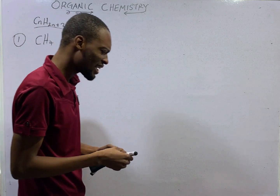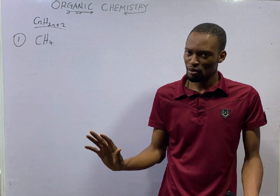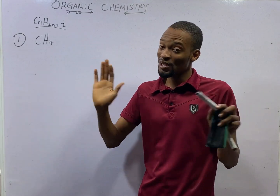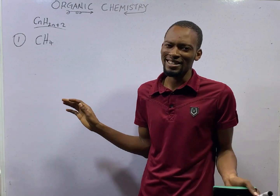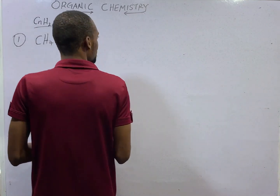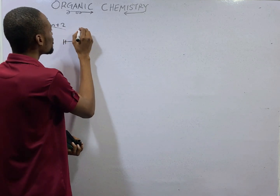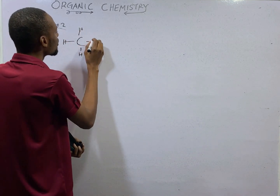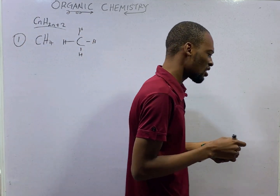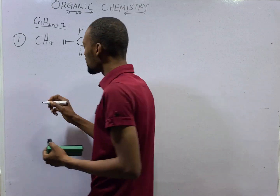Alkanes are characterized by single carbon-to-carbon bonds. Just draw the carbon, scatter hydrogen around it. You will see carbon — that is the first member. And what is the name? It is called methane.